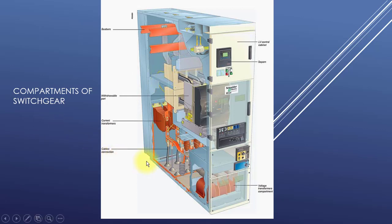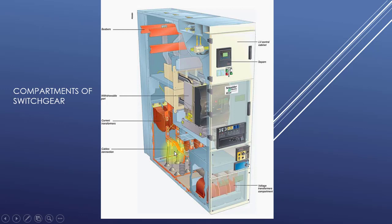The fourth compartment is here — you can see on the downside these are the cables coming in, so it must be a cable compartment. You can see the CT here, which has two connections — incoming and outgoing — so current is going through this device. Here you can also see insulators and VTs installed, confirming this is the cable compartment.